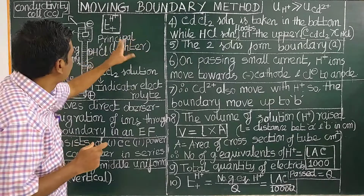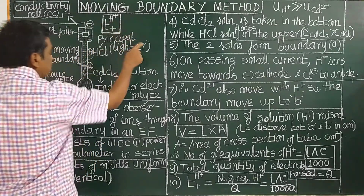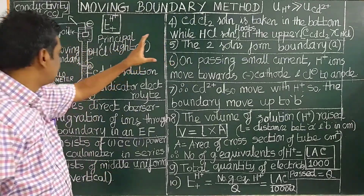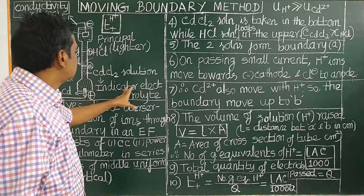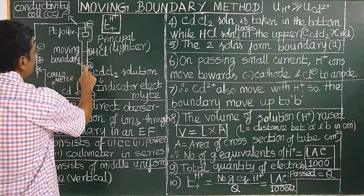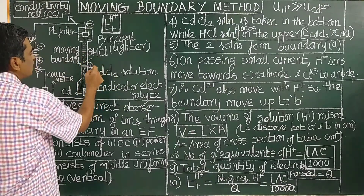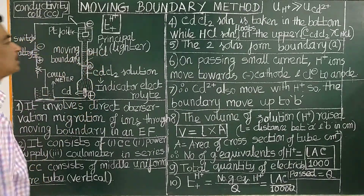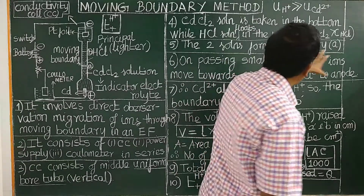HCl — hydrochloric acid — is the principal electrolyte for which the transport number is determined. The cadmium chloride solution is used as the indicator electrolyte. It forms a sharp boundary with the hydrochloric acid solution.